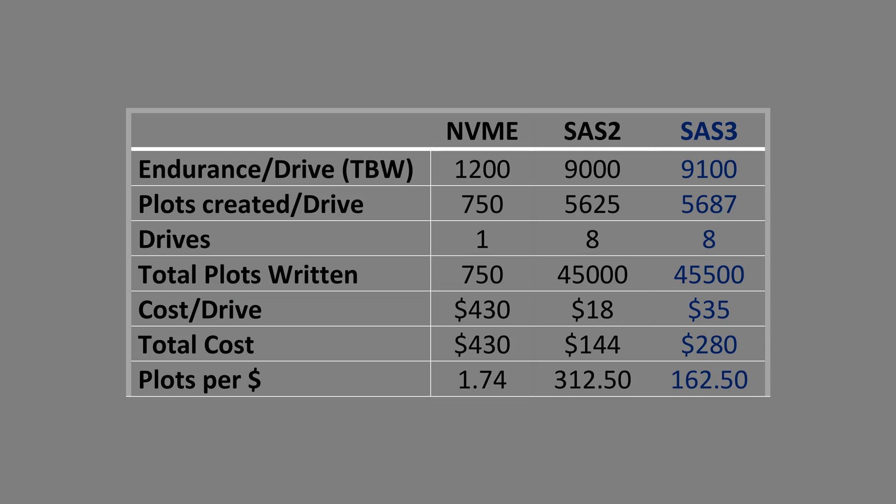The SAS 2 SSDs are capable of handling 45,000 plots if you have eight of them, and that's without a RAM disk. With a RAM disk, you're looking at four times that amount. So how long does it take for you to hit that 45,000 limit, and what about the SAS 3 drives and the NVMe?